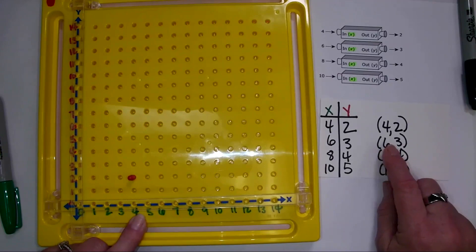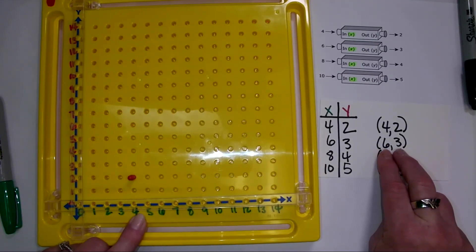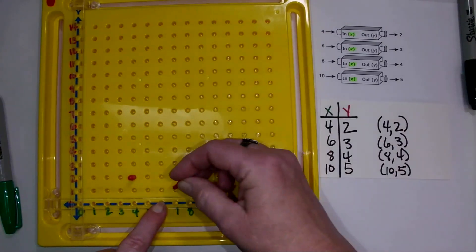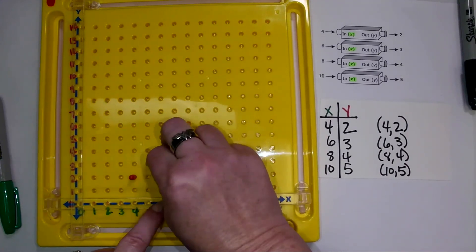Then my next ordered pair is 6, 3. So I'm going to look for 6 on my x axis. And then I'm going to go up 3, 1, 2, 3. And I'm going to put a 1, 2, 3. I can count.